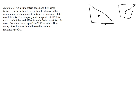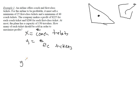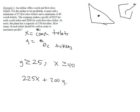I'm going to use X and Y. Let X equal the number of coach tickets and Y equal the number of first class tickets. We have some constraints: Y has to be at least 25 or bigger, and X has to be at least 40 or bigger. The company makes a profit of $225 for each coach ticket and $200 for each first class ticket — kind of contradictory, isn't it? So $225 times the number of coach tickets sold plus $200 times the number of first class tickets sold is how we get our profit.